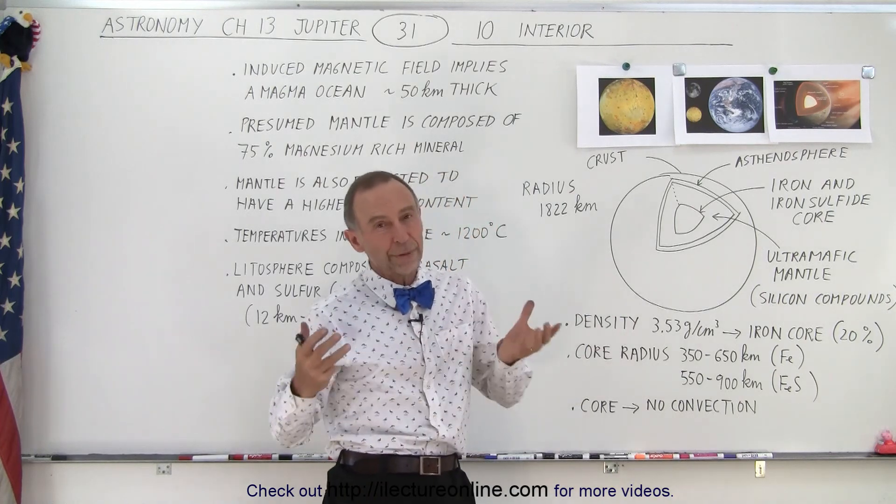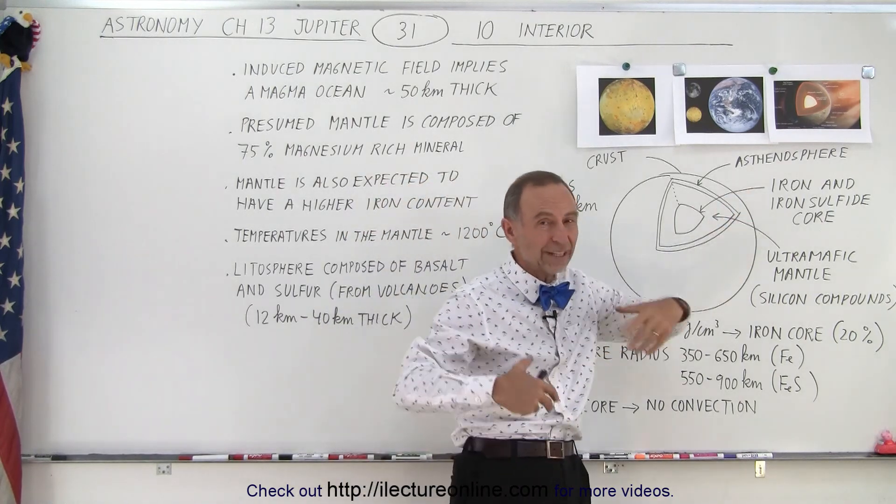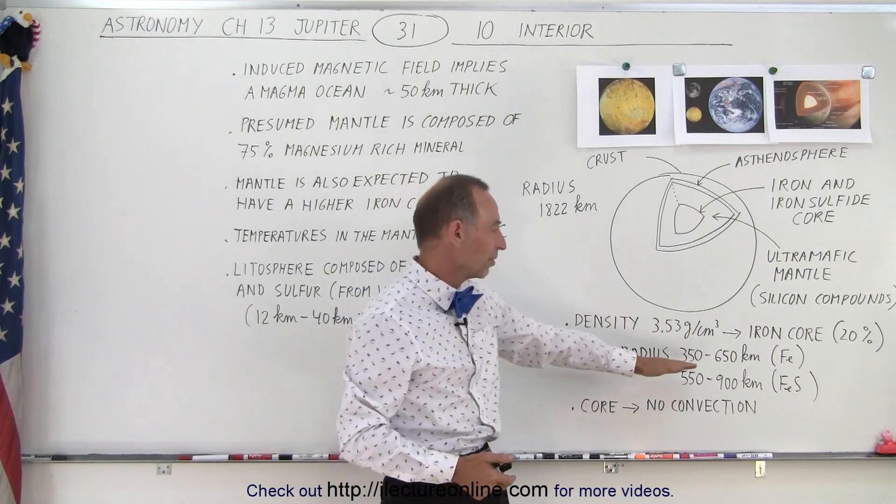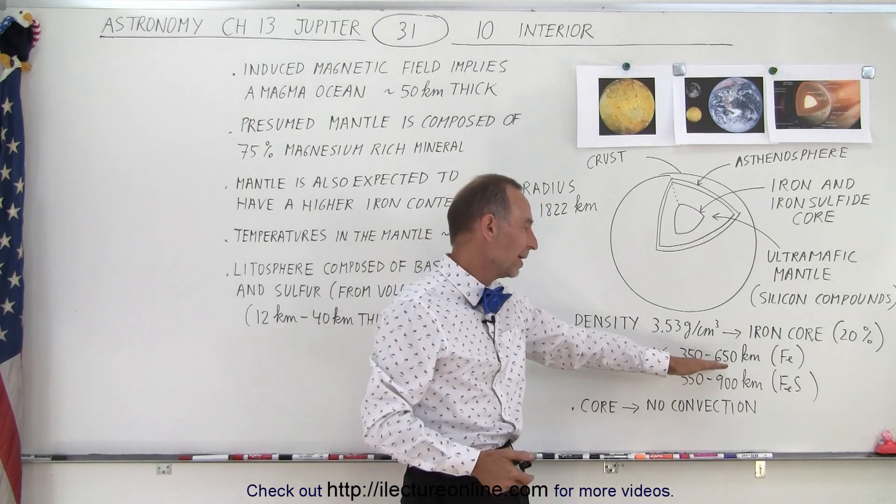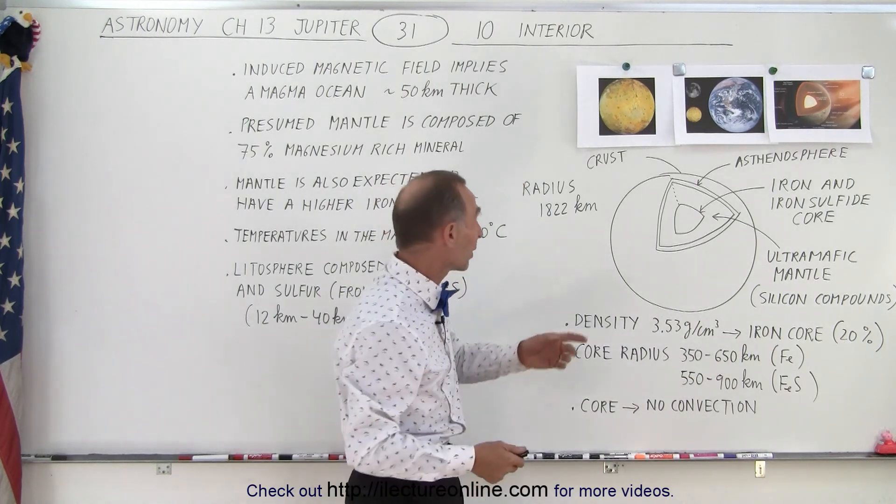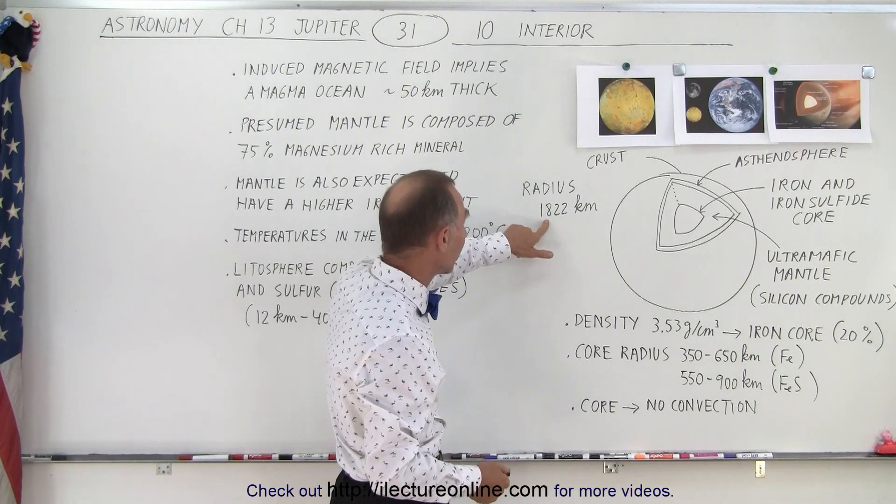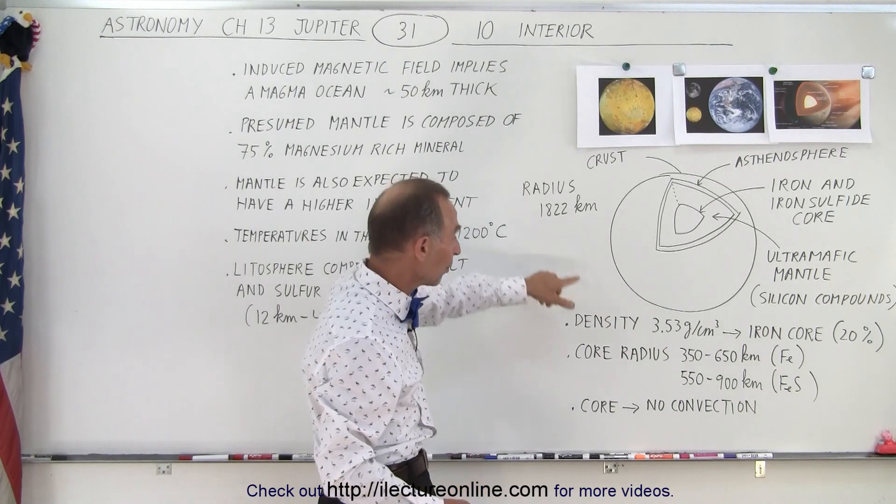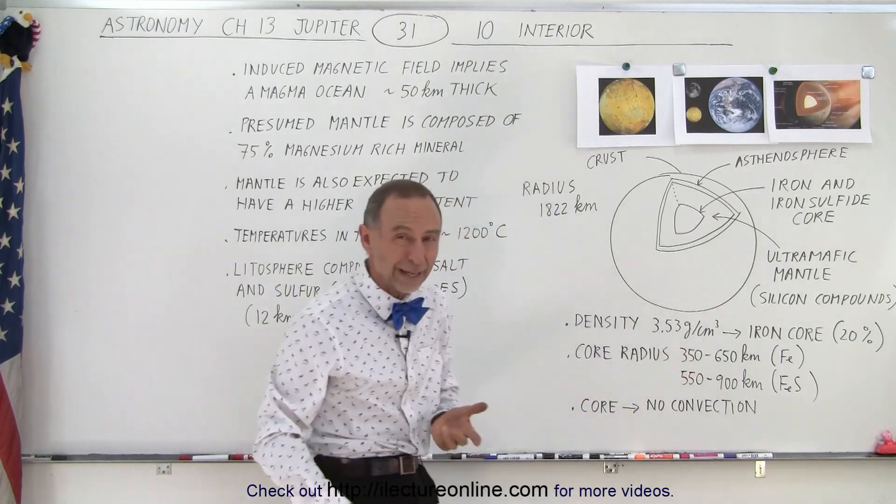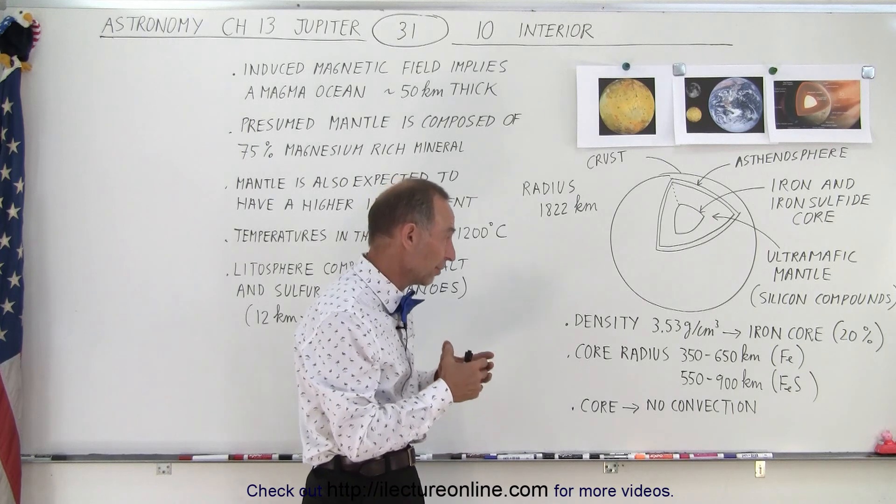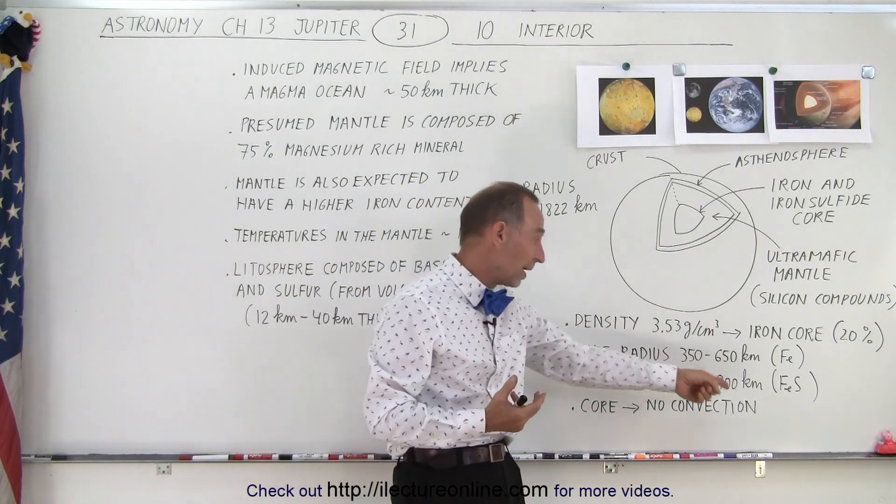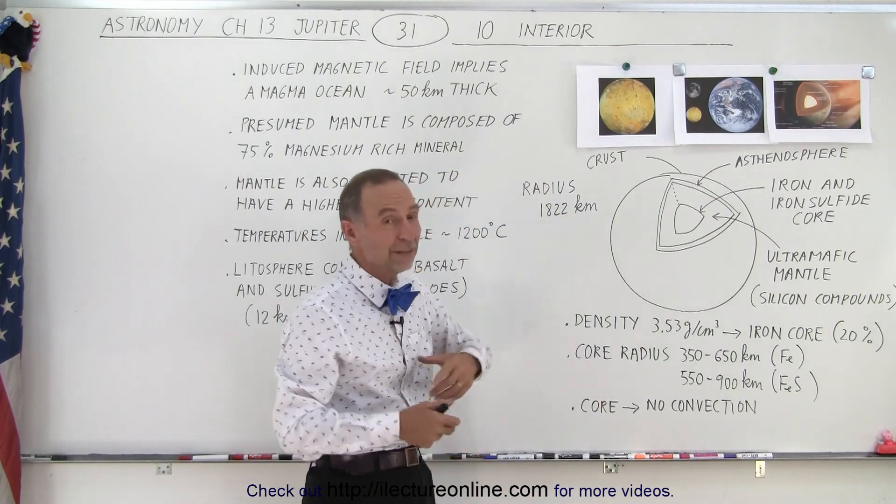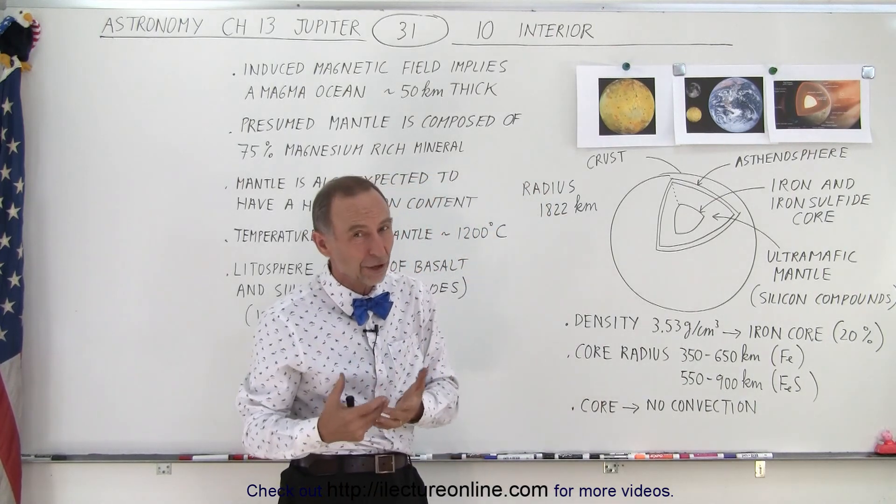Now the size of the core depends upon whether it's mostly just iron or an iron sulfide compound. If it's just iron, the estimation is that the radius is somewhere between 350 and 650 kilometers. That's significant because the radius of Io is 1,822 kilometers, so it could be anywhere from about a fifth to a third of Io's radius. If it's made up of iron sulfide, then the radius could be as much as 550 to 900 kilometers, which means it could be almost half the radius of Io.